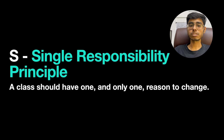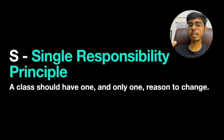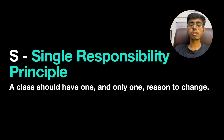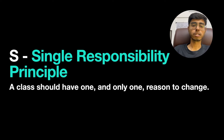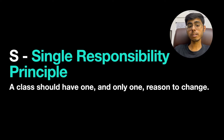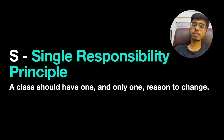The first design principle is S — the Single Responsibility Principle. It states that a class should have one and only one reason to change. So if you are writing code where one class can be mutated or changed because of multiple reasons, that means your code is not following the Single Responsibility Principle.